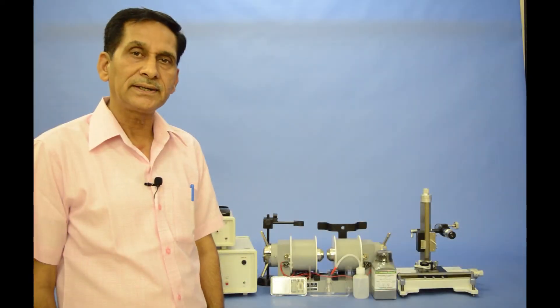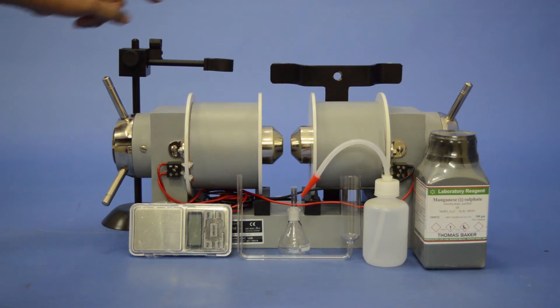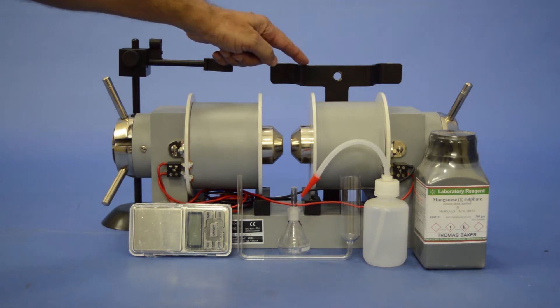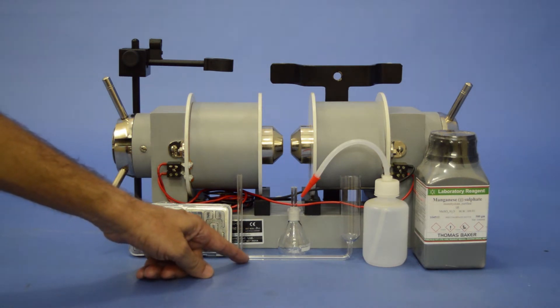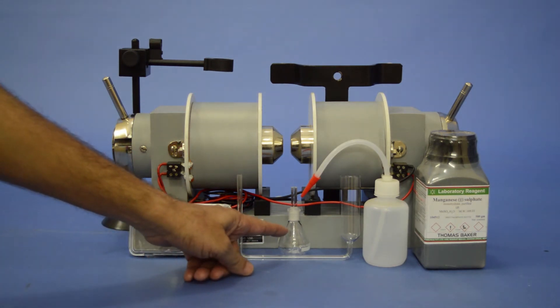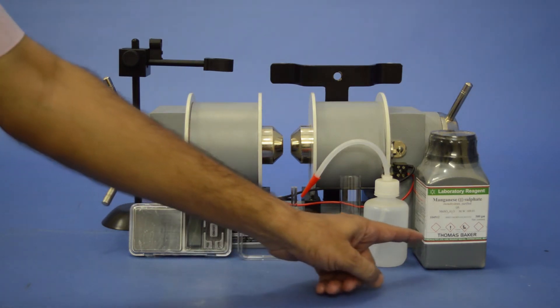When you open the carton, you will get multi-purpose stand, electromagnet stand, digital balance, Kuhn's tube, RD bottle, mixing bottle, MnSO4.H2O sample.